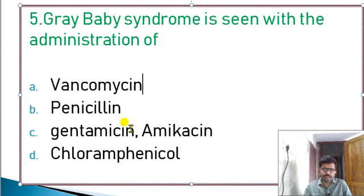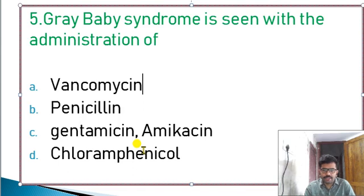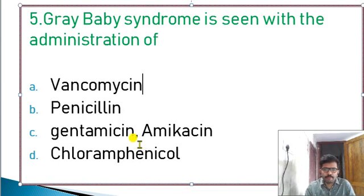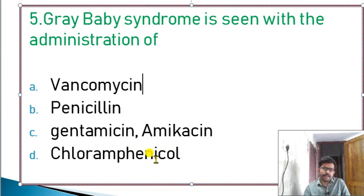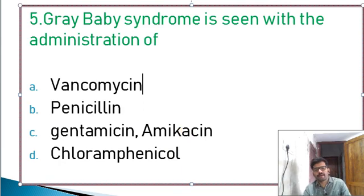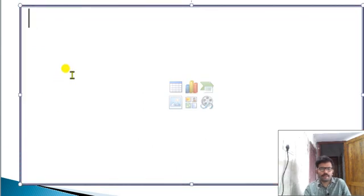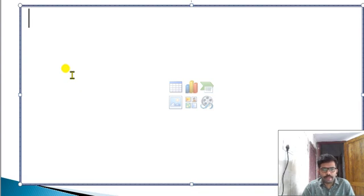Aminoglycosides — such as gentamicin and amikacin — are bactericidal antibiotics. Aminoglycosides are ototoxic drugs, causing damage to the 8th cranial nerve, the vestibulocochlear nerve, leading to hearing and balance damage.